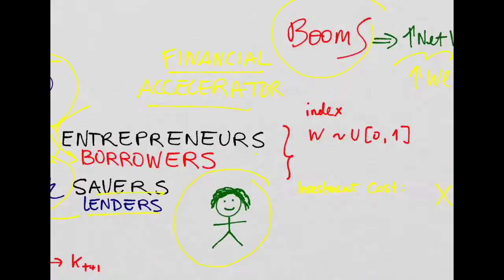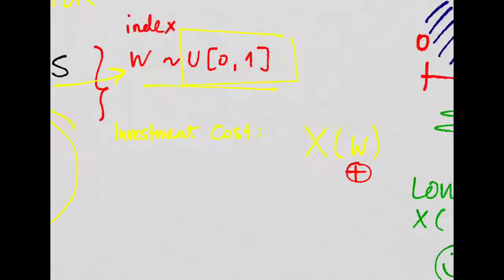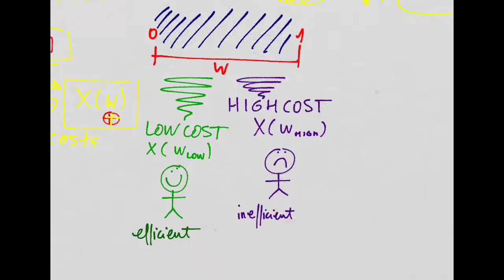So, entrepreneurs will be indexed by this W. Think of W as a variable that is uniform between 0 and 1, but it's like describing the type of entrepreneur you are. We're going to define X(W) as the cost of investment that these entrepreneurs are going to have, and this is going to be an increasing function on this W. So, entrepreneurs that have higher Ws will face higher costs.